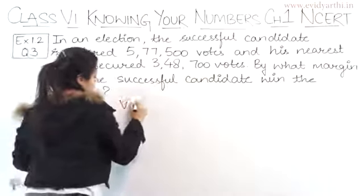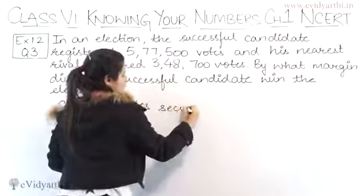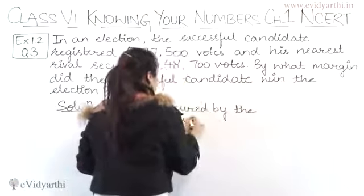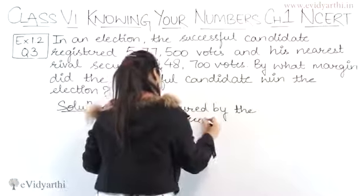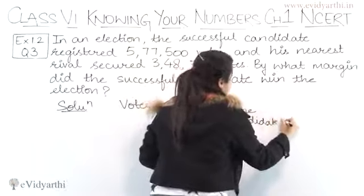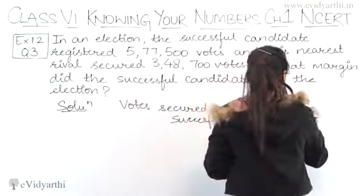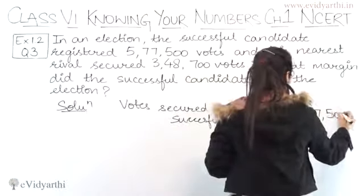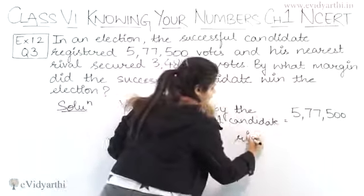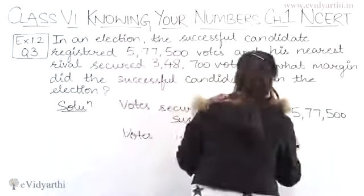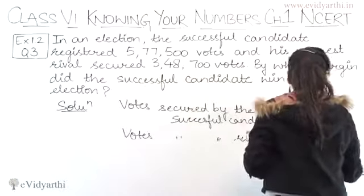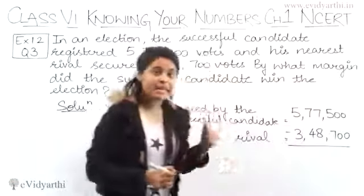Votes secured by the successful candidate is 5,77,500. Votes secured by the rival is 3,48,700. So let's subtract this.